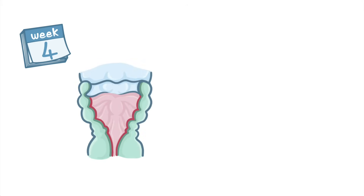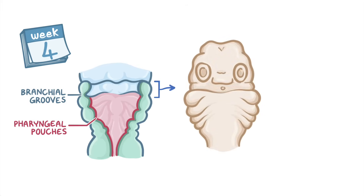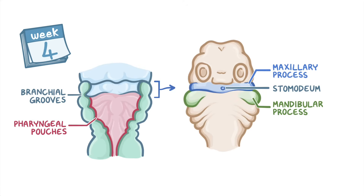The pharyngeal arches are separated externally by small clefts on the pharyngeal wall called branchial grooves, and internally by corresponding depressions called pharyngeal pouches. The first pharyngeal arch splits up into two processes: the maxillary process, which lies lateral to the stomodeum and extends slightly above, and the mandibular process, which lies near the lower border of the stomodeum. The mandibular processes on either side grow towards each other and merge into a single structure very early on.